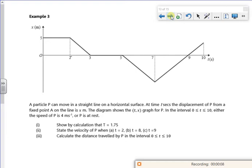So I've got a graph here on the displacements. A particle P can move in a straight line on a horizontal surface. At time t the displacement of P from the fixed point A on the line is x meters. That's just a vertical height.